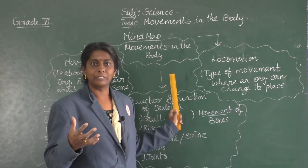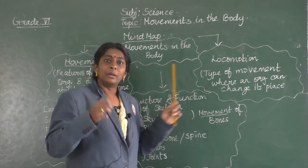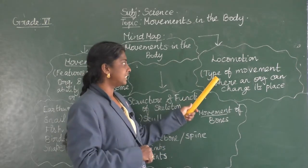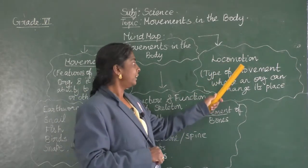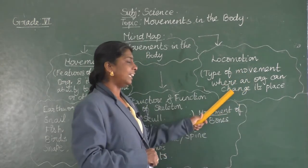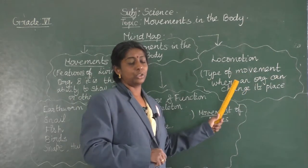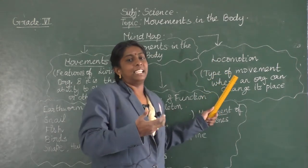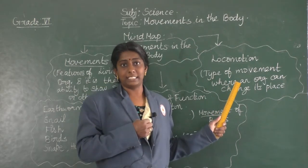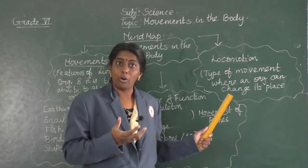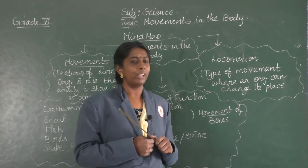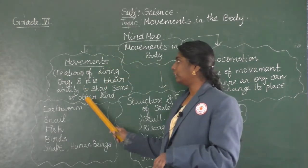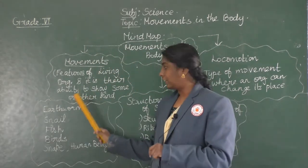Locomotion is a term similar to movement, but there is a slight difference. Locomotion is a type of movement where an organism can change its place. By doing that movement, it can change its place. For example, walking, swimming, crawling — so many things. That is what locomotion is about.